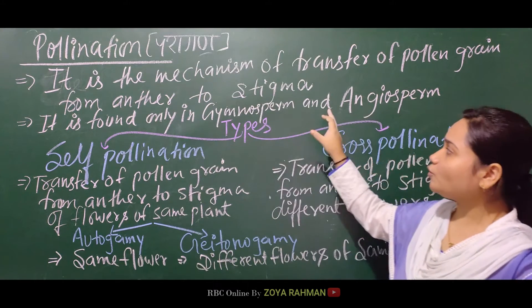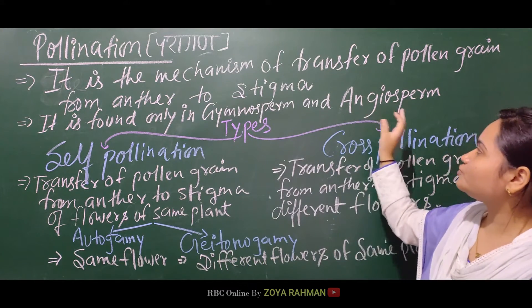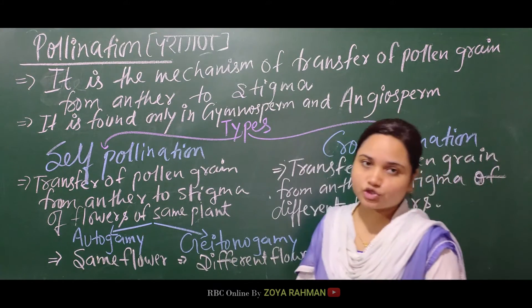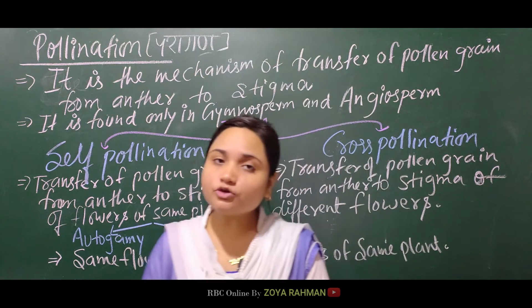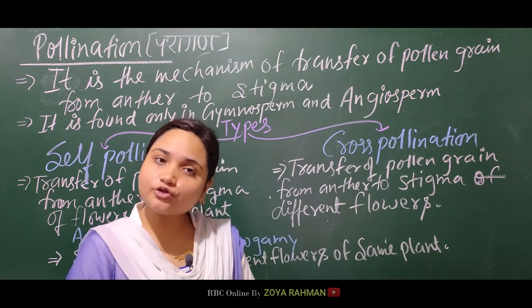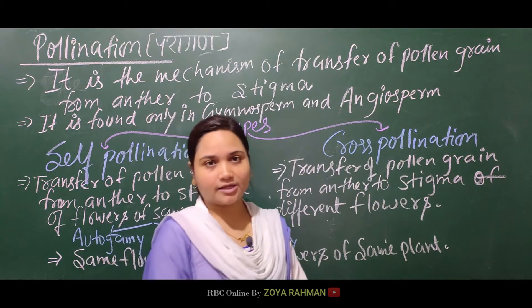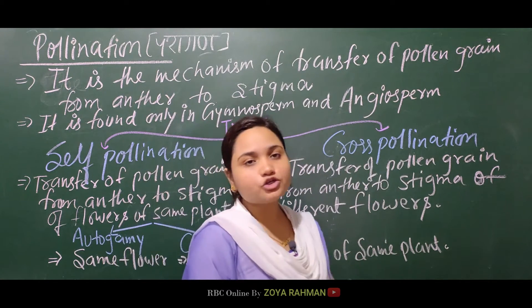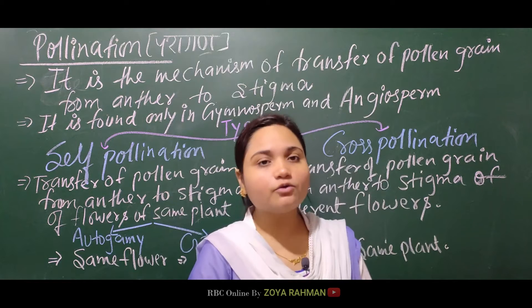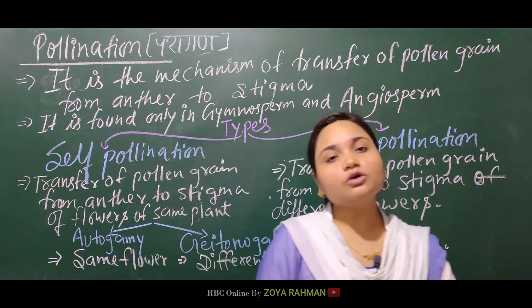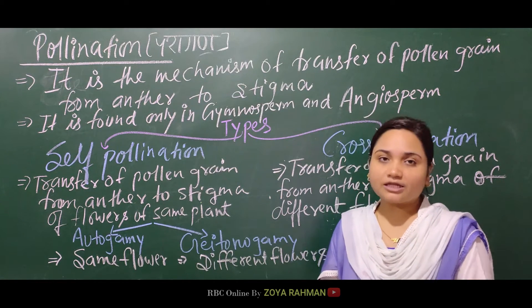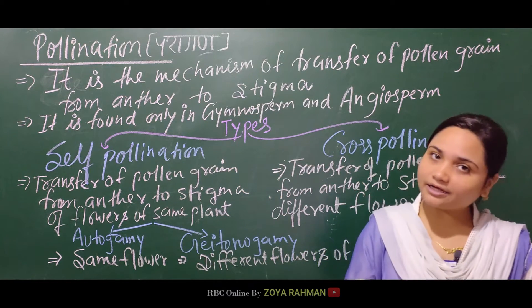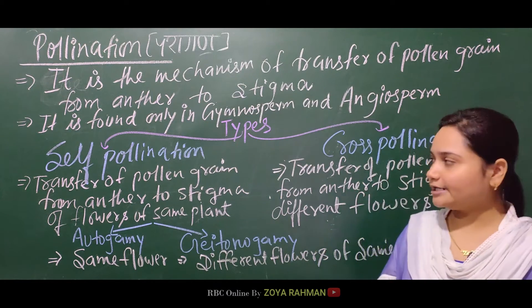Pollination is found only in gymnosperms and angiosperms. Angiosperms are flowering plants. These are the two groups of plants in which pollination is seen.